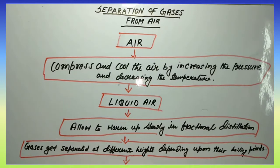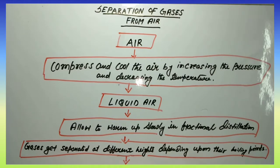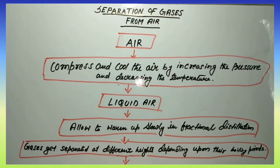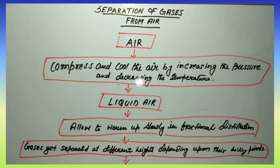Examples include nitrogen, oxygen, argon, carbon dioxide, etc. These can be separated from air by fractional distillation. So, by which process will we separate these constituents from air? By fractional distillation.